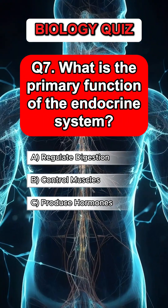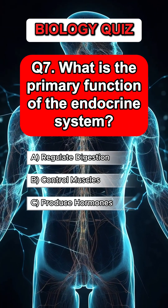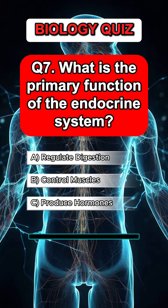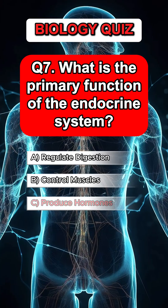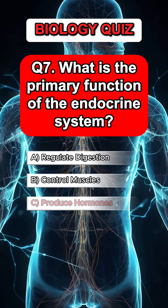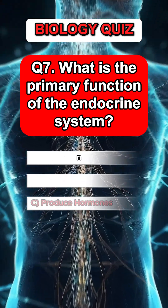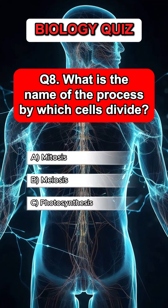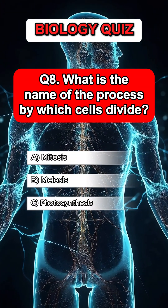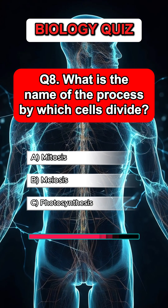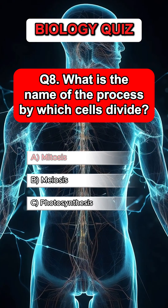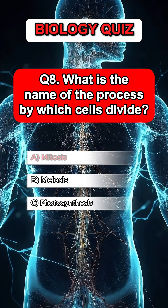Question 7. What is the primary function of the endocrine system? Answer C. Produce hormones. Question 8. What is the name of the process by which cells divide? Answer C. Mitosis.